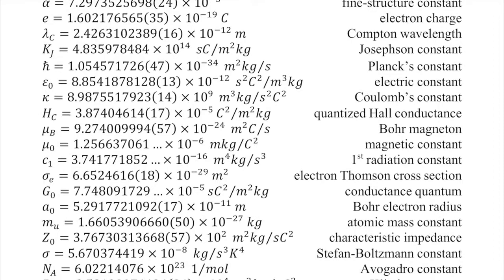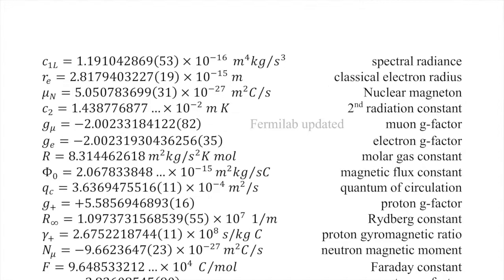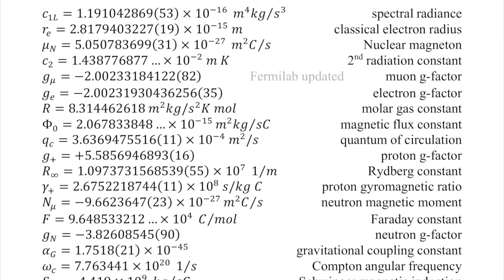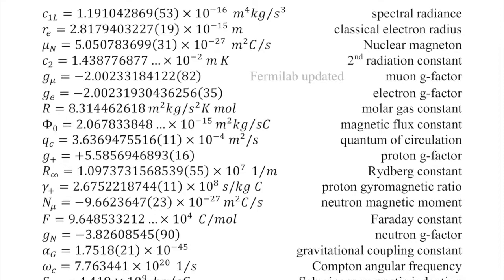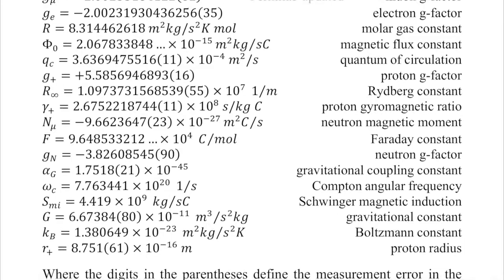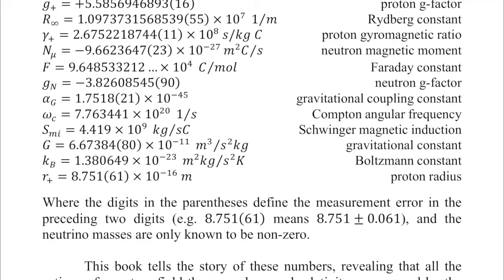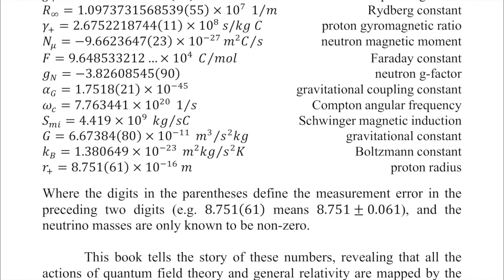The electron charge, a fundamental parameter of existence; the Compton wavelength — all the way down to recognize the speed of light. The value listed here is the updated Fermilab value for the muon g-factor, recently updated compared to the rest. This list is the list of the parameters of existence, and the numbers with the highest precision — the most digits — represent the most precise measurements ever made in science of any kind. The greatest measurement precision in all of science reaches all the way out to 14 significant digits.